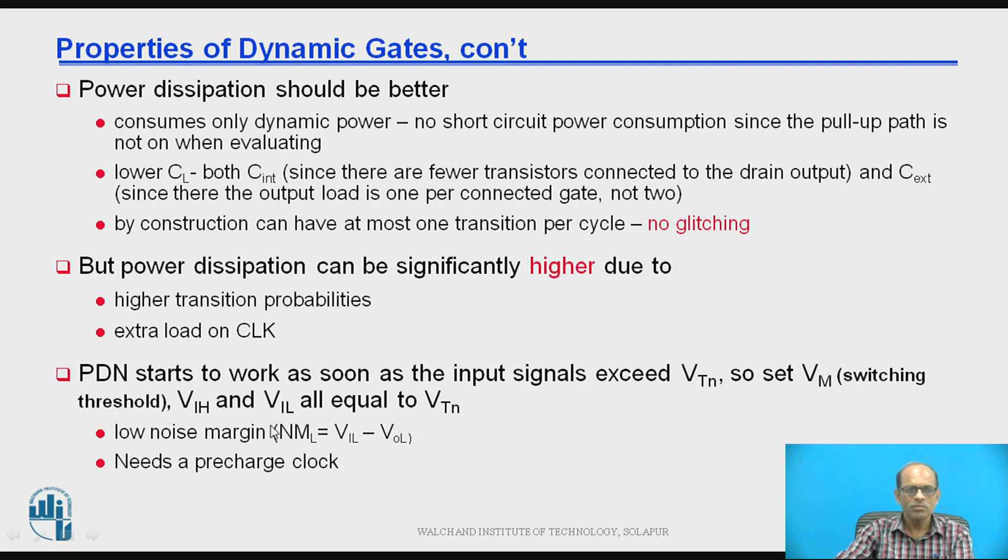Now pull-down network starts to work as soon as the input signal exceeds the VTN. So set Vm that is the switching threshold. So Vih and the Vil are equal to VTN. So drawback is the noise margin is low. It needs a pre-charge clock.